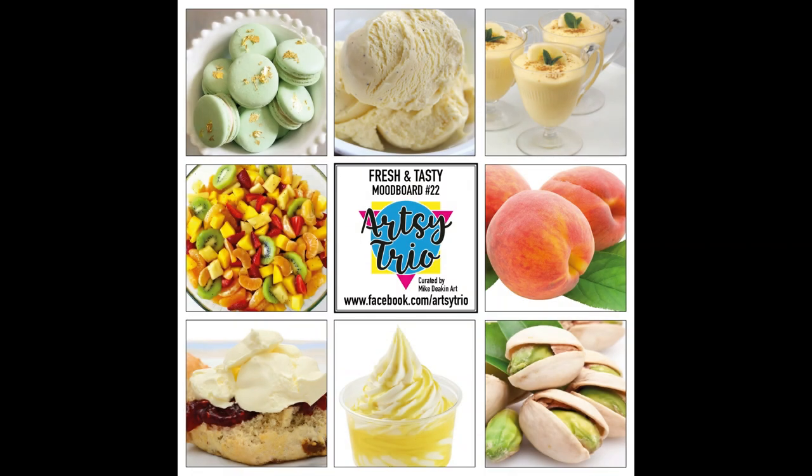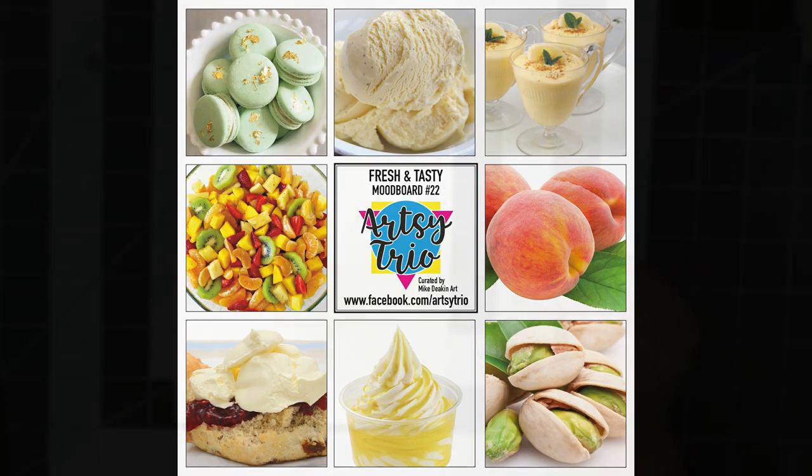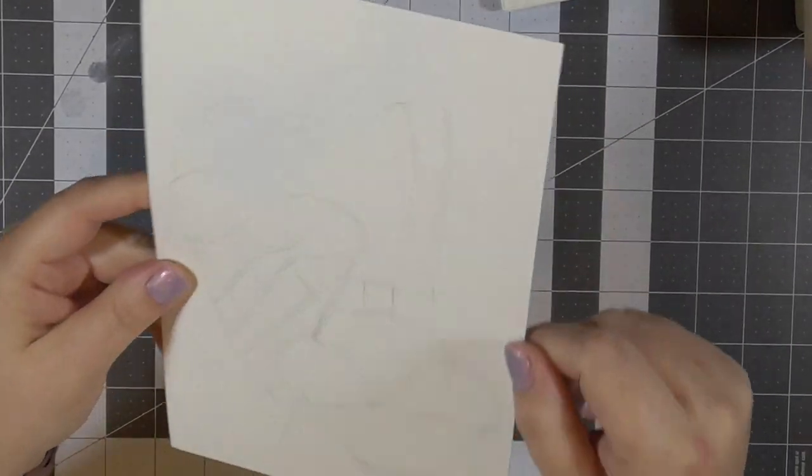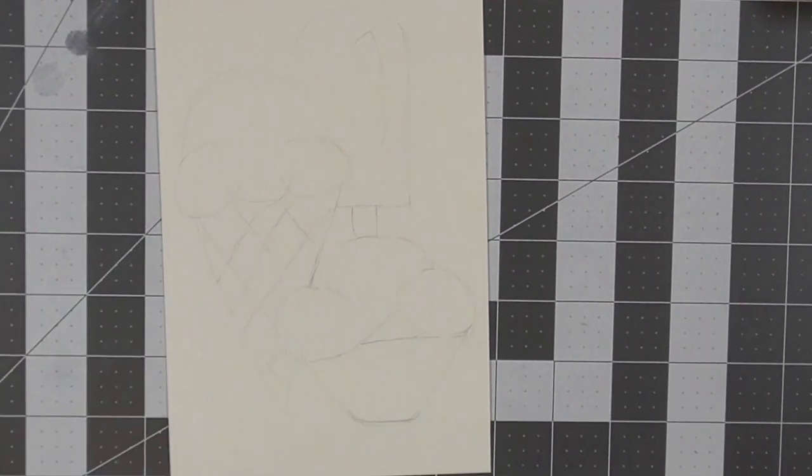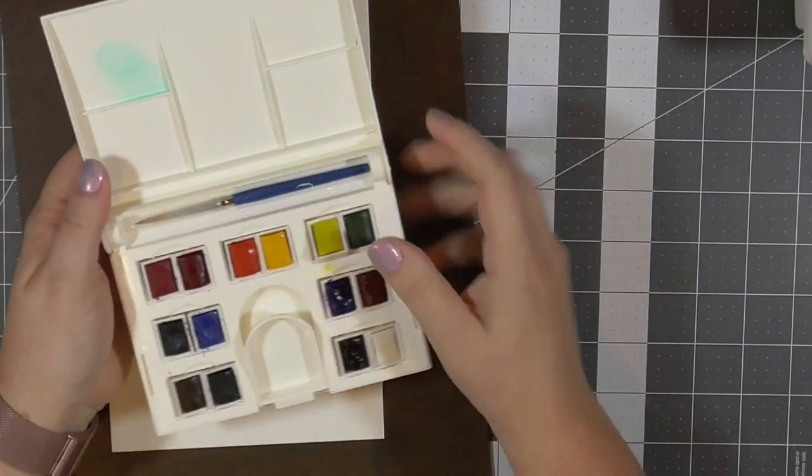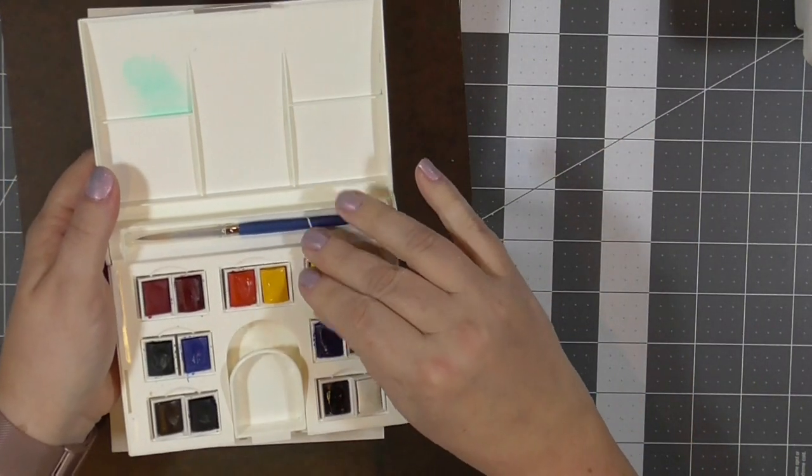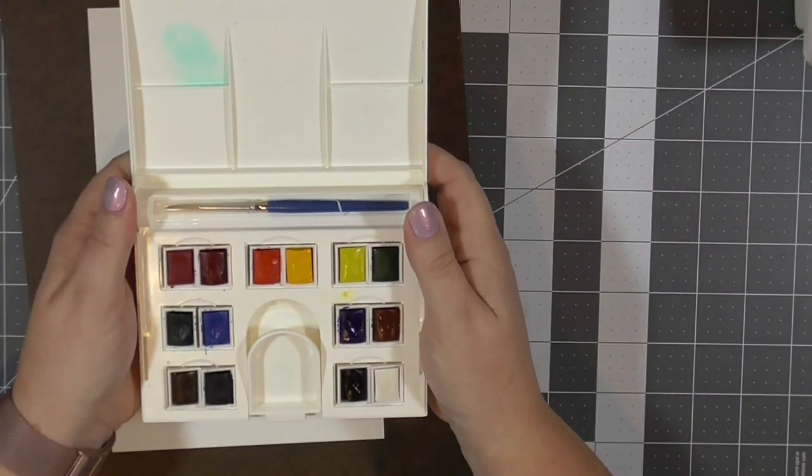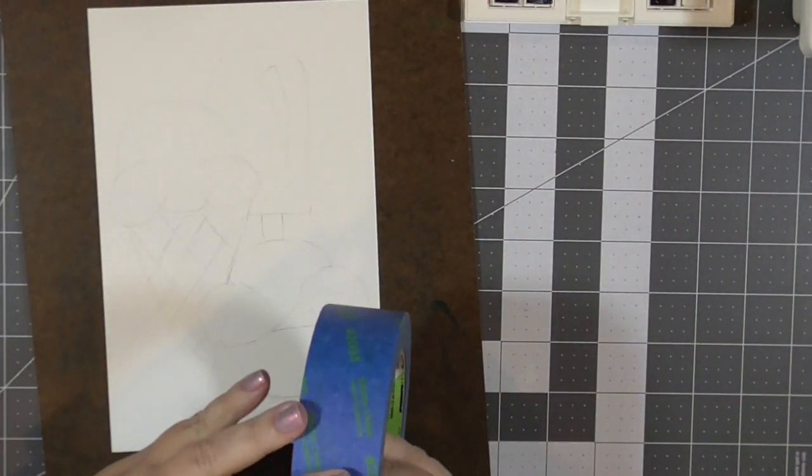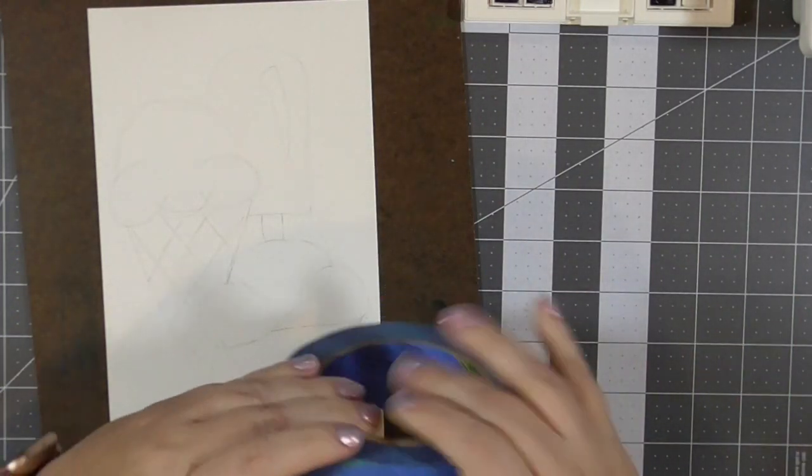This is the mood board for the Artsy Trio Facebook group. It is created by Mike Deacon. It is all things pastel and yummy treats and summer delectables. And I wanted to watercolor. I enjoyed watercoloring a couple of weeks ago. So I pulled out a piece of watercolor paper and I've sketched out some ice creams. I'm going to be watercoloring them with this Windsor and Newton watercolor palette that my children got me for Christmas. And I'm going to begin by taping down my watercolor paper to my hardboard.